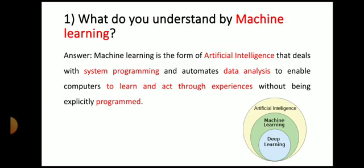The very first question: what do you understand by machine learning? The answer is, machine learning is the form of artificial intelligence that deals with system programming and automates data analysis to enable computers to learn and act through experiences without being explicitly programmed. Here you can see, machine learning is the domain of artificial intelligence, whereas deep learning is the domain of machine learning.